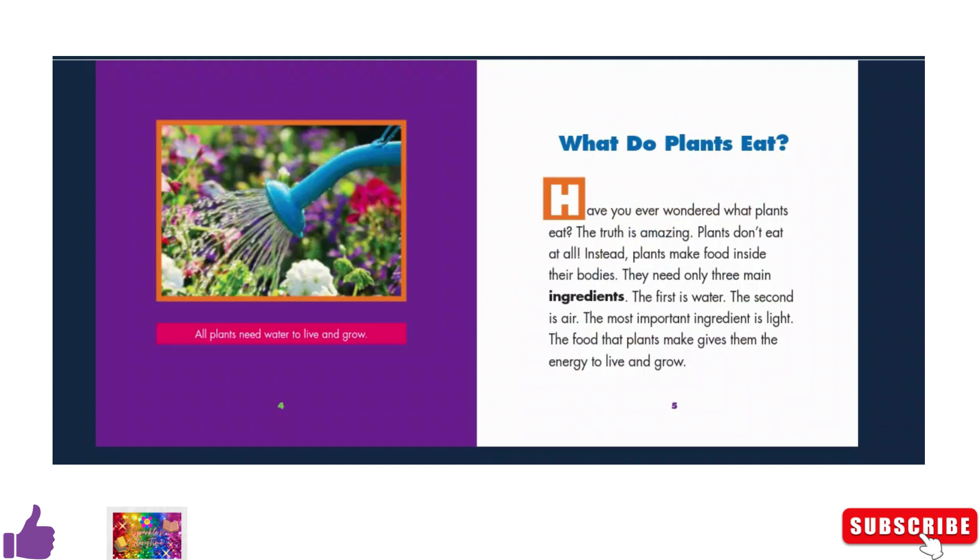The first is water. The second is air. The most important ingredient is light. The food that plants make gives them the energy to live and grow.